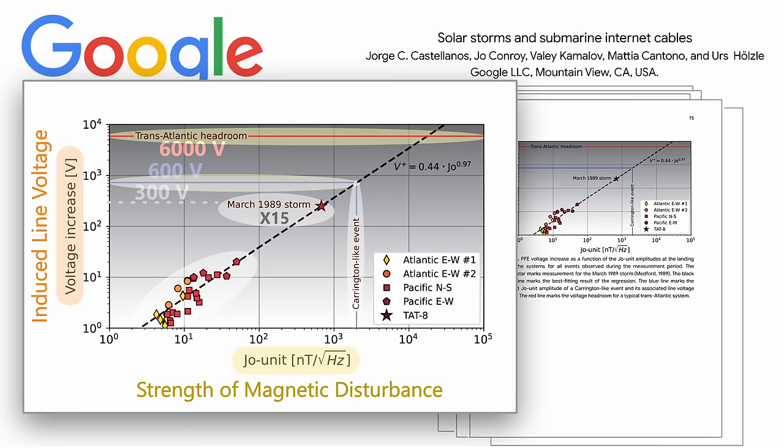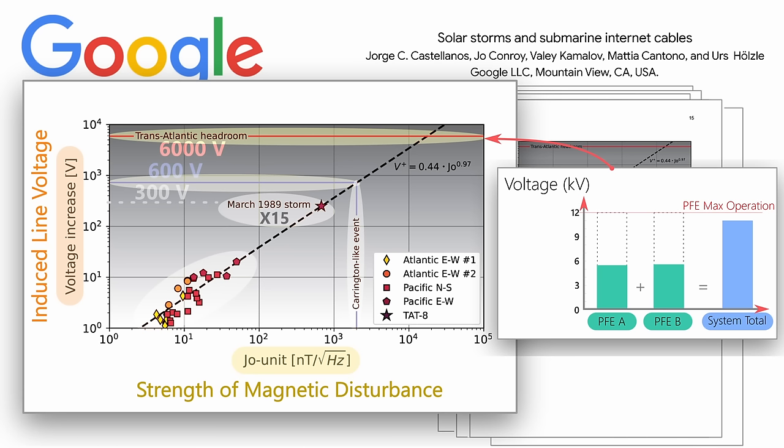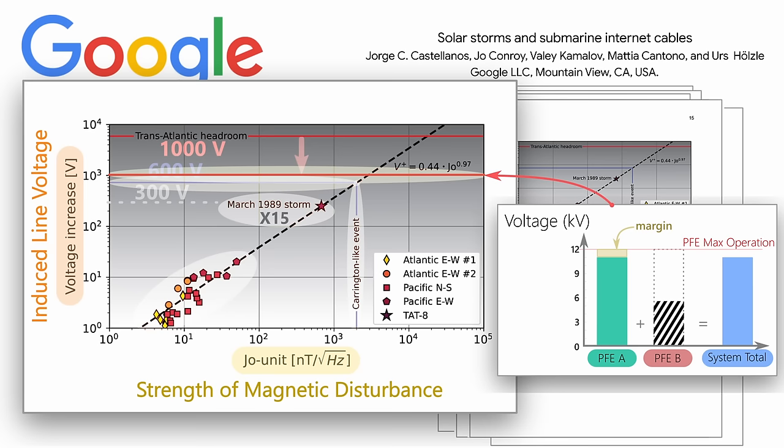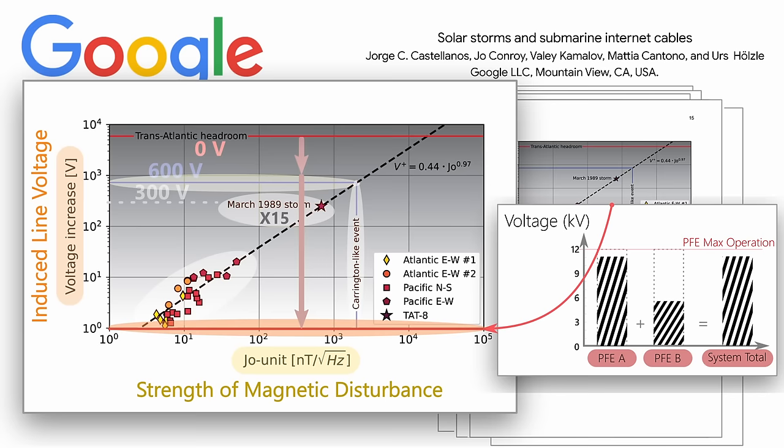First, the 6,000 volt transatlantic headroom is only accurate if both PFEs are fully operational during the entire geomagnetic solar storm. If you learn one thing from this video, you should know these events are hardly localized, and power disruptions can span over entire regions and countries. If only one of these PFEs fails due to a power grid disruption, this brings the transatlantic headroom down to 1,000 volts, since the operational PFE must then compensate for the downed PFE. Obviously, if both PFEs fail, the headroom goes to zero and the entire cable fails.